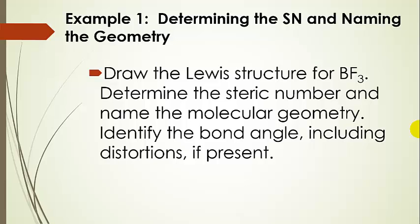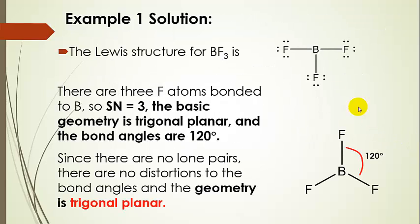Let's do a few examples. We're going to determine the steric number, name the geometry, identify bond angles, and note any distortions. For boron trifluoride: here's the Lewis structure. The central atom is bonded to three atoms — steric number three, basic geometry trigonal planar. Everything is a bonded atom with no lone pairs, so the basic geometry is also the molecular geometry name: trigonal planar. All bond angles are 120 degrees and are not distorted.